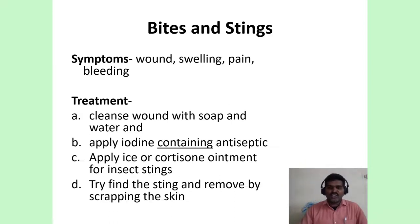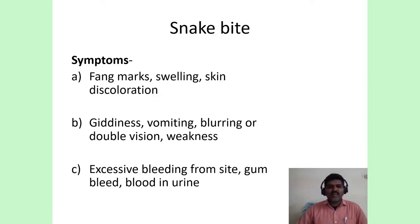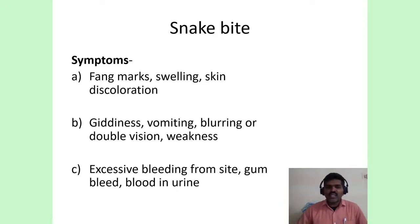Snake bites: symptoms include fang marks, swelling of the skin, skin discoloration, giddiness, vomiting, blurring of vision, double vision, weakness, neurological manifestations, excessive bleeding from gums, blood in the urine as hematological manifestations. The Indian big four snakes are cobra, krait, Russell's viper, and saw-scaled viper. Cobra is purely neurological with no hematological manifestations. South Indian cobra and Russell's viper can cause both hemotoxic and neurotoxic manifestations. The saw-scaled viper is purely hemotoxic.